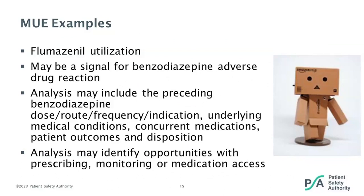I'd like to share topic examples for MUE that may be useful to consider. The first is flumazenil utilization, which often signals an adverse drug reaction to a benzodiazepine. Key stakeholders will include provider teams who prescribe these medications. Data points to consider may include identifying the implicated benzodiazepine with dose, route, frequency, and indication for use, the concurrent medications the patient was receiving such as opioids, and the patient outcomes and dispositions. The ensuing analysis may identify trends and opportunities with prescribing, monitoring, or access to those medications.